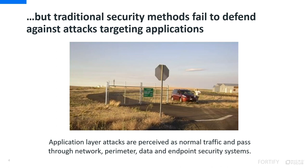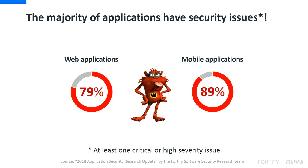Application layer attacks can be perceived as normal traffic and passed through network, perimeter, data, and endpoint security systems. Typically, an organization tries to catch the attack rather than prevent it to begin with. Fortify's software security research team finds that a vast majority of applications — 79% of web and 89% of mobile — have at least one critical or high-severity issue. A critical issue is one that has high impact and a high likelihood of occurring; it's easy to discover and to exploit. An example would be SQL injection.